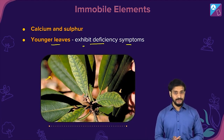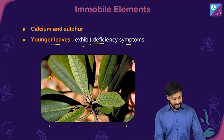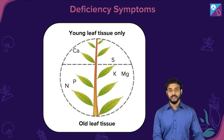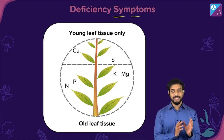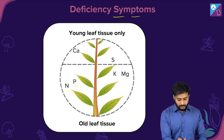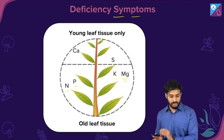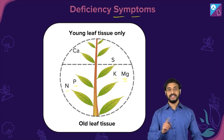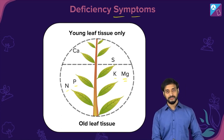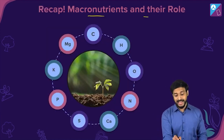Remember, calcium and sulfur are immobile elements — questions can be asked on this, so please be careful. The mobile elements — nitrogen, phosphorus, potassium, magnesium — move from older to newer leaves when required, while calcium and sulfur do not move.